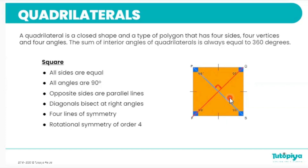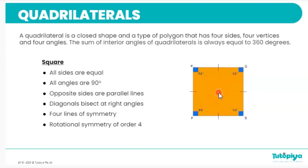Other properties of the square include its lines of symmetry. A square has four lines of symmetry. It also has rotational symmetry of order four, meaning that if I place a pin at the center and keep rotating it, the square falls into the same orientation four different times within a full 360-degree rotation.